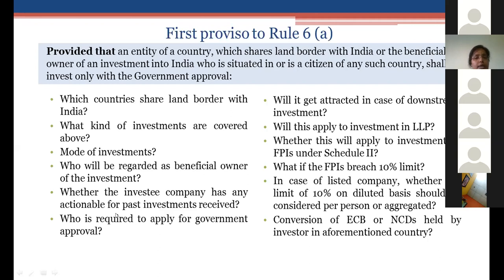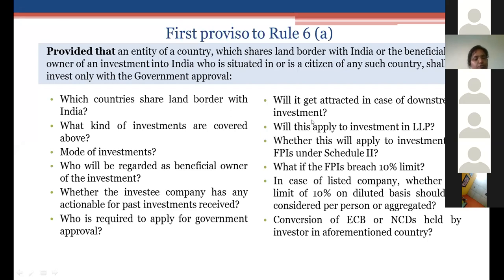In case of an allotment or issuance, the Indian company itself applies for government approval; in case of a transfer, the investor applies. On downstream investment — this appears to be a regulatory gap: the amendment only extends to investments made by entities outside India; it does not extend to investments made by an Indian company in another Indian company, even if that investing company is owned and controlled by entities from any of the seven countries. This gap needs to be addressed by the Ministry through a further amendment.